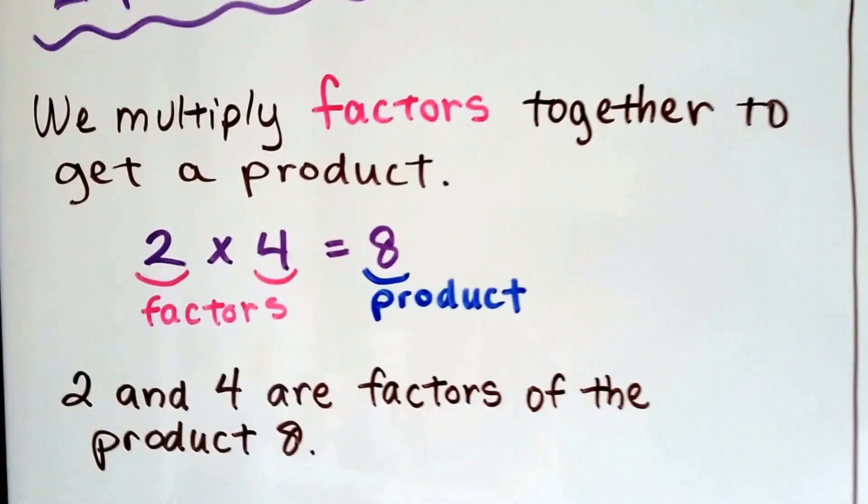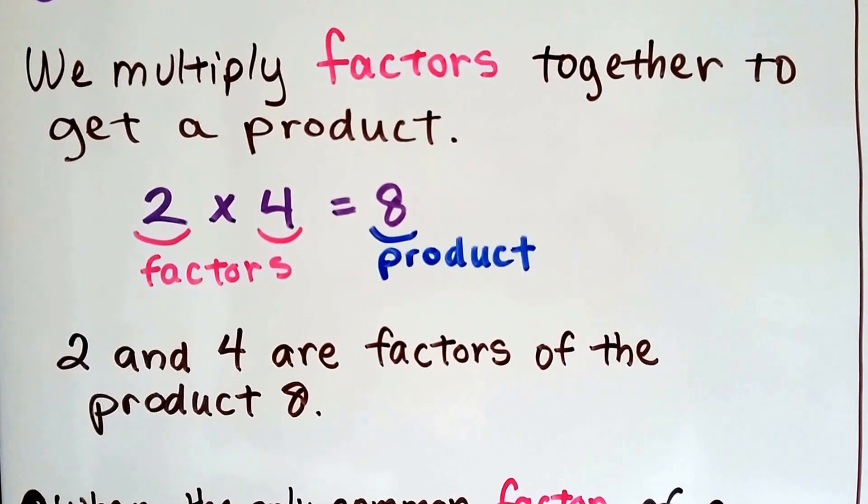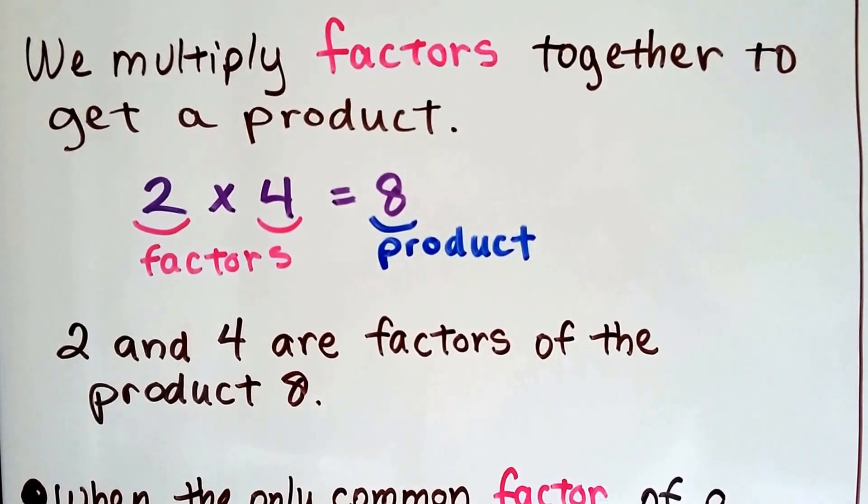We multiply factors together to get a product. 2 times 4 equals 8. The 2 and the 4 are factors, and the 8 is the product.